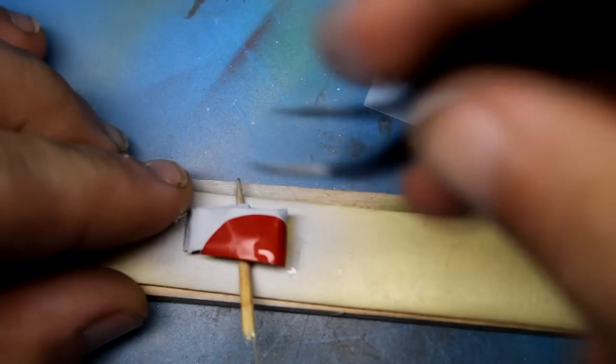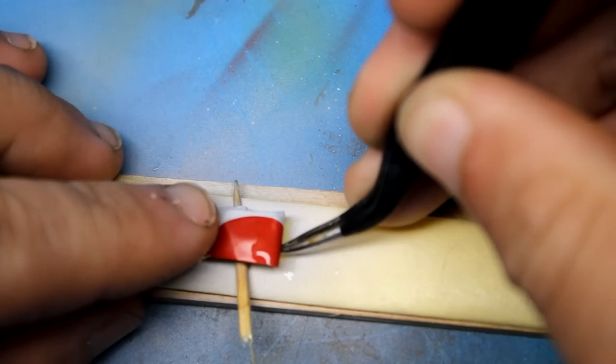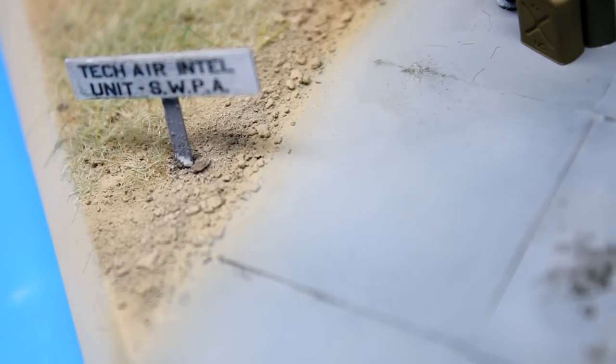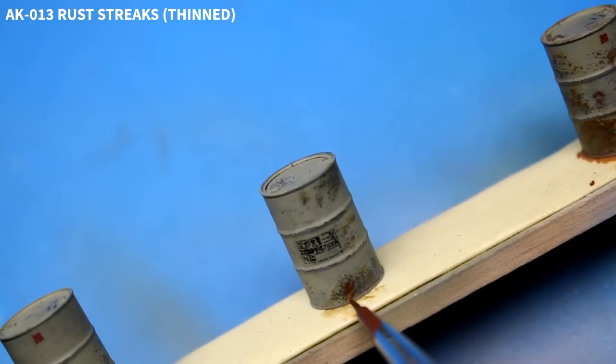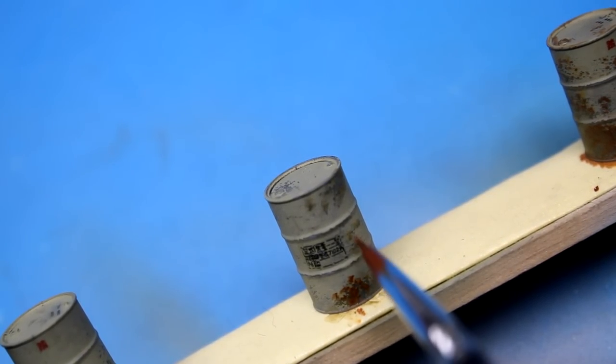I grabbed three fuel drums out of that stowage set as well, painted them in some Japanese color, and chipped it off to a German gray underneath, and then added in a rust wash. And with that, the diorama was pretty much complete.